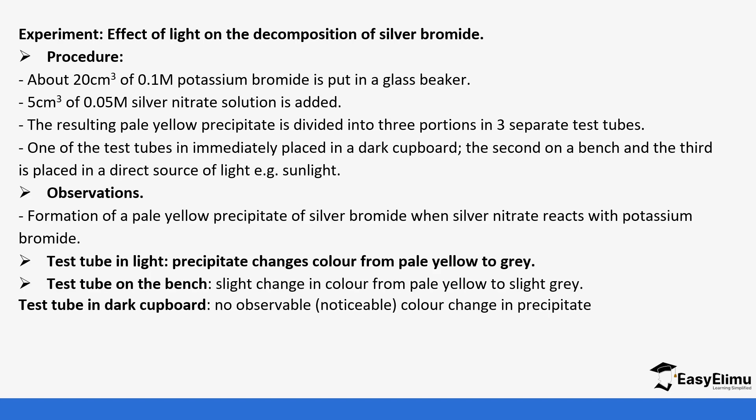You'll notice there's a formation of a yellow precipitate of silver bromide when silver nitrate reacts with potassium bromide. It's a double decomposition reaction forming silver bromide and potassium nitrate. The silver bromide that is formed is yellow in color, it's a precipitate.